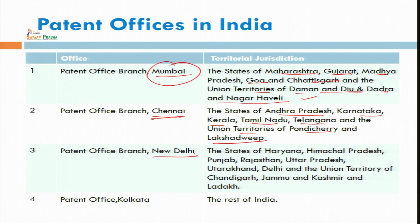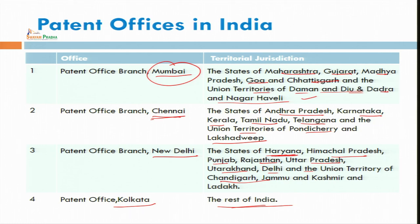The New Delhi office is in Sector 14 of Dwarka, New Delhi. It includes the northern states: Haryana, Himachal Pradesh, Punjab, Rajasthan, Uttar Pradesh, Uttarakhand, and Delhi. Specific zones are divided, and the Kolkata office includes the rest of India — for example, the north-eastern states and West Bengal. If a person belongs to Himachal Pradesh, they will go to New Delhi; if from Gujarat, they will go to Mumbai.